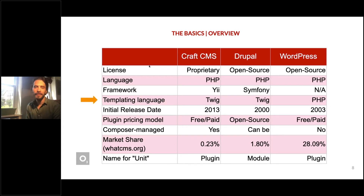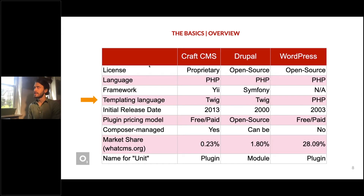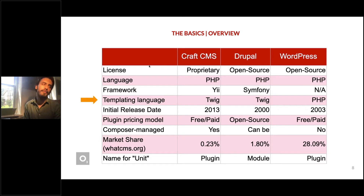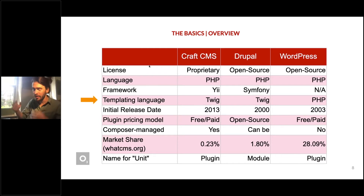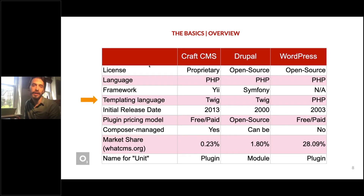PHP developers like Twig, and Craft CMS and Drupal come with Twig built in, whereas WordPress comes with PHP as a templating language — that's why PHP was devised in the first place, to intercalate logic and HTML markup in the same file. You can actually install contributed plugins that give you Twig templates for WordPress.